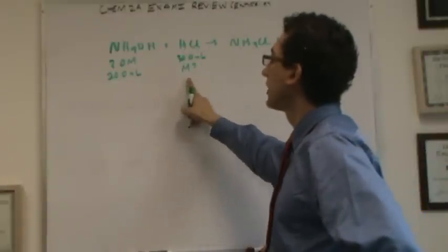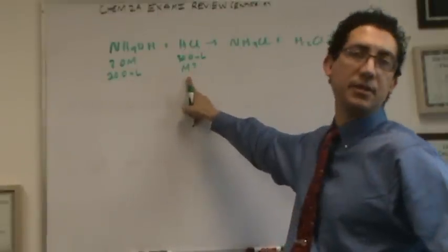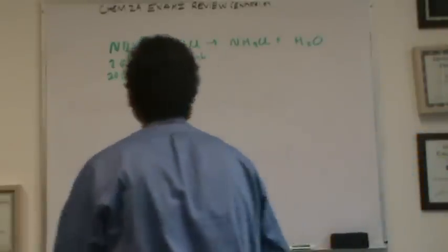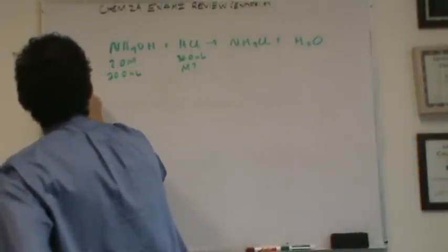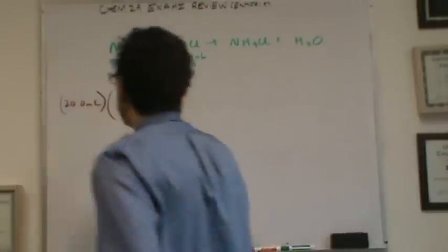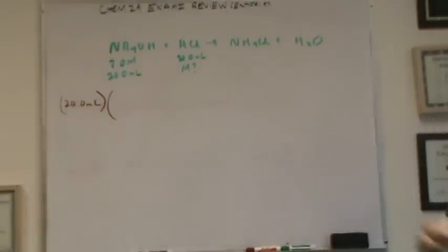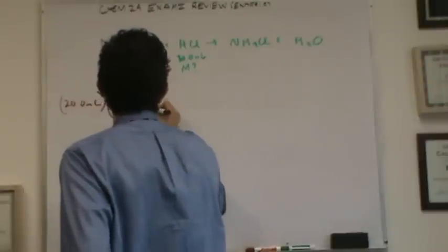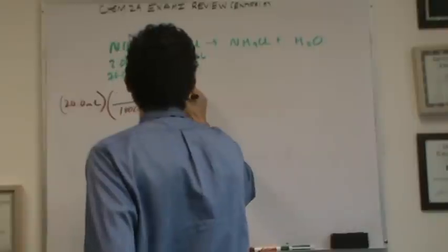Start with what you know. I'm going to do a molar ratio to get over here, and then convert until I can get molarity. So let's check this out. Start with what you know, 20 milliliters, and just for convenience sake, let's change this to liters. So 1,000 milliliters in the denominator, a liter in the numerator.